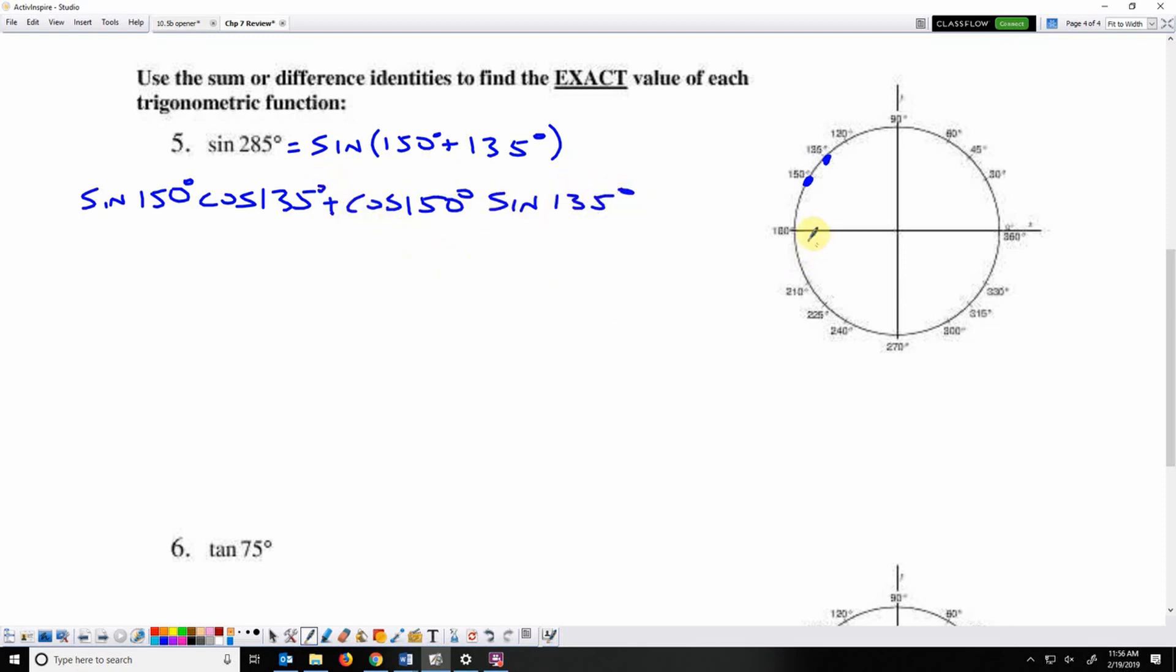Sine is the y value. 150 is in the first position. The y value is 1 over 2. Cosine is the x value. And 135 is the second position left, which is negative root 2 over 2.